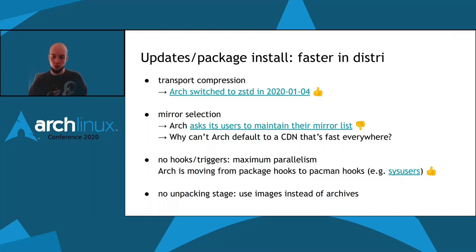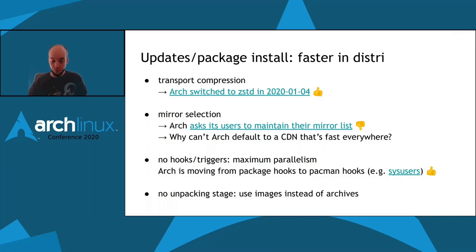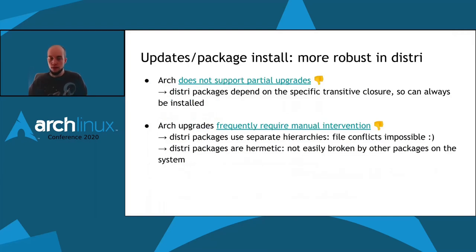The idea is to entirely remove hooks and triggers so that you can go to maximum parallelism. But crucially, a key architectural difference is that in DISTRI there is no unpacking stage, because DISTRI uses images instead of archives for its packages. This also makes package installation more robust in DISTRI.